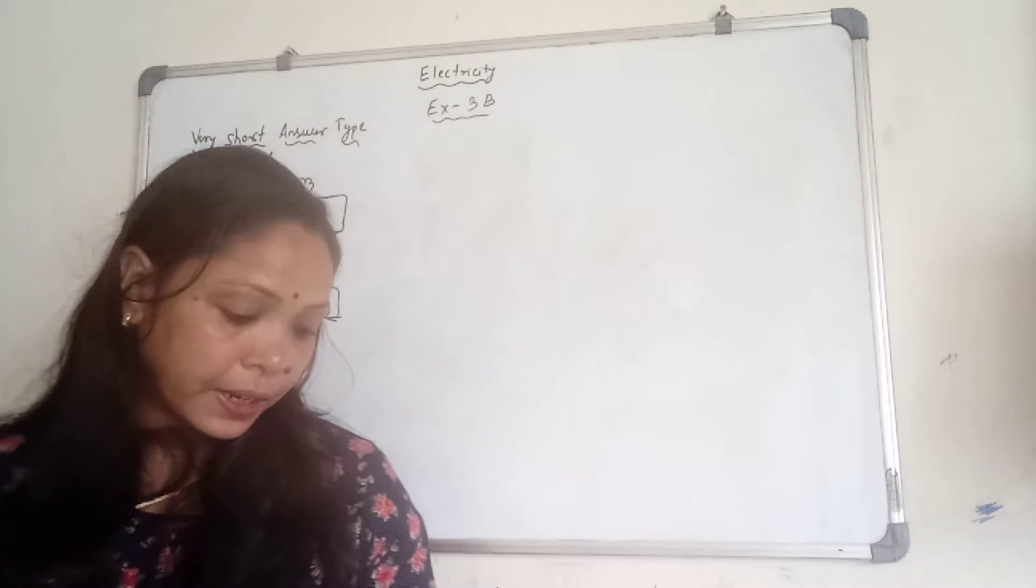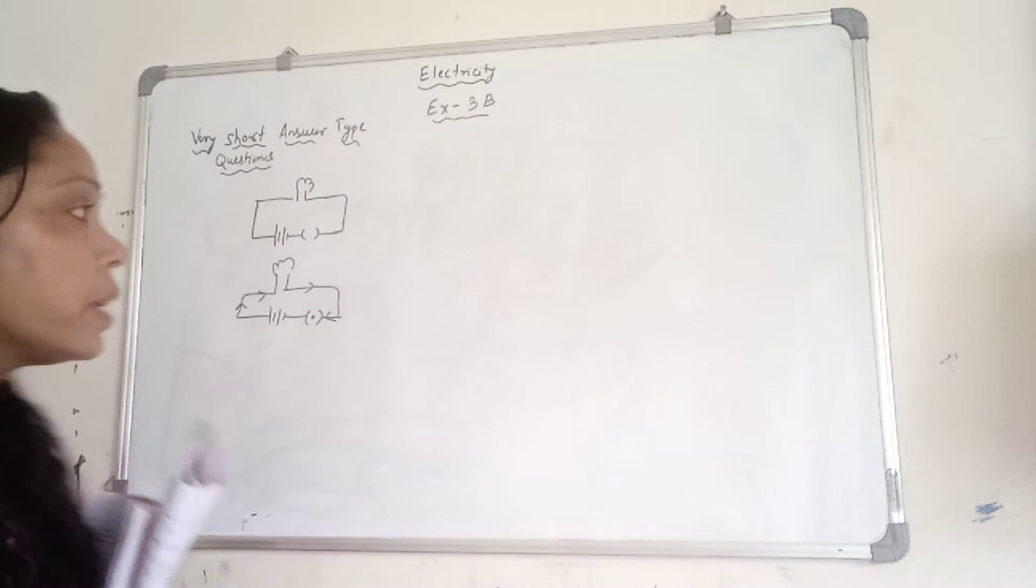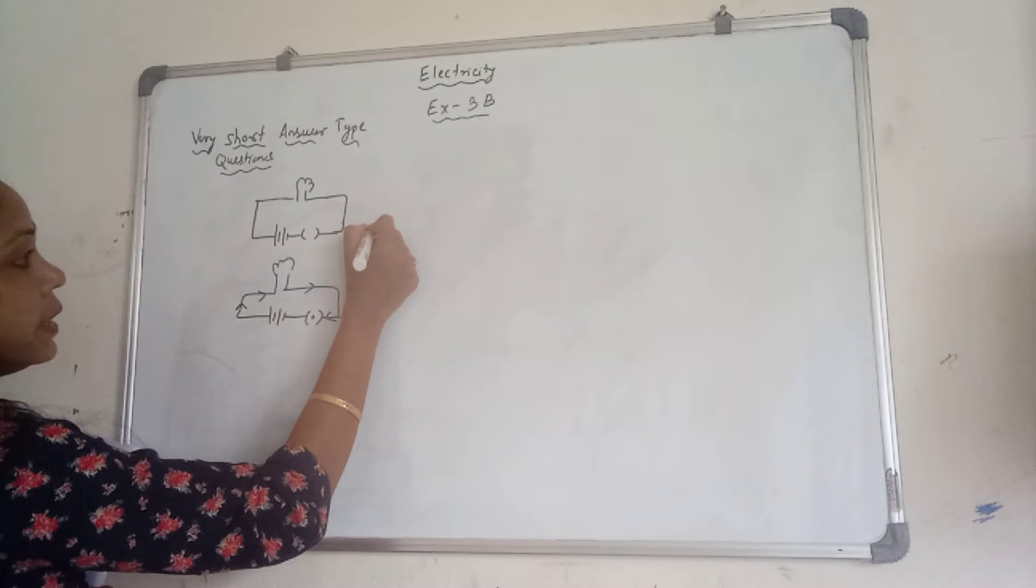And if I draw like this, with this key, if I put one dot, it means now it is your closed circuit. And whenever in closed circuit, the current is flowing from positive to the negative. These two are the diagrams for your open circuit and the closed circuit.